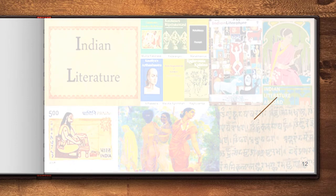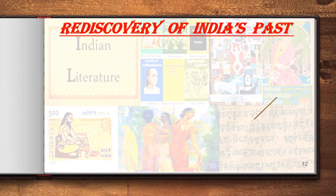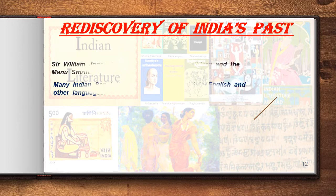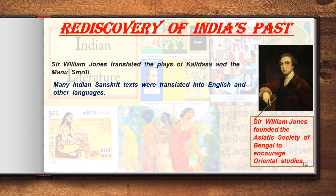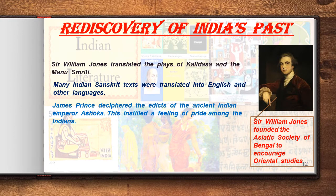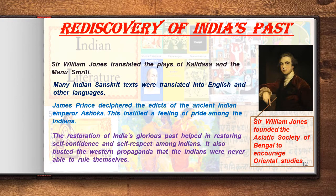The discovery of India's past was another important factor. Many Indian and European scholars discovered the ancient glory of Indian history, which filled the hearts of Indians with the feeling of nationalism. Many Indian Sanskrit texts were translated into English and other languages. Sir William Jones founded the Asiatic Society of Bengal to encourage Oriental studies and translated the plays of Kalidasa and the Manusmriti. Sir Charles Wilkins was the first European to translate the Bhagavad Gita into English. James Prinsep deciphered the edicts of the ancient Indian Emperor Ashoka, instilling a feeling of pride amongst the Indians. The restoration of India's glorious past helped in restoring self-confidence and self-respect.